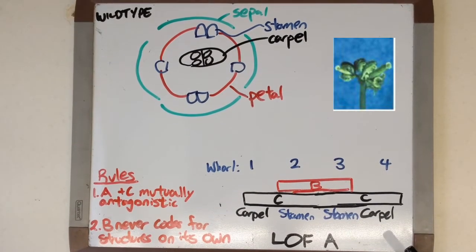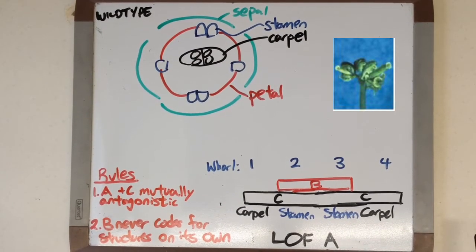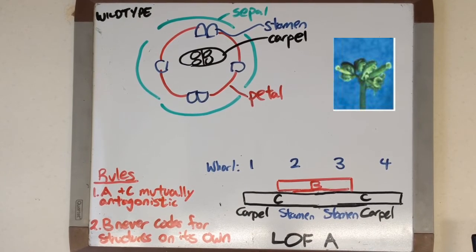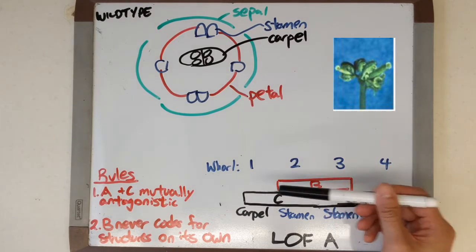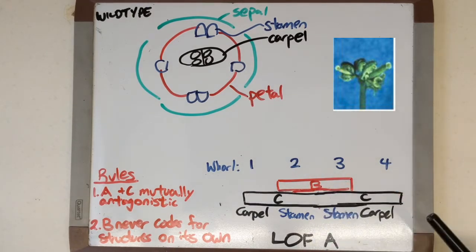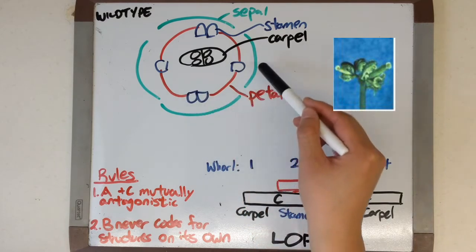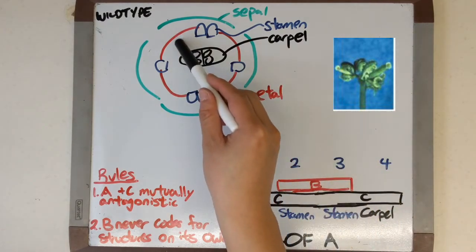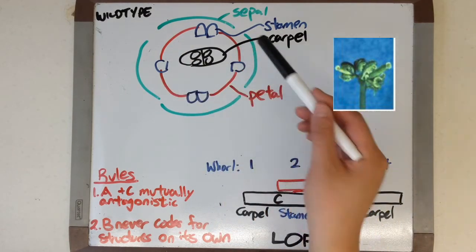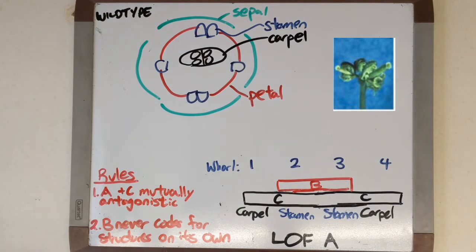So next we'll talk about some different mutations, starting with the loss of function of gene class A. If A is not present, C will not be repressed, and this means that gene class C will expand its expression to cover all four whorls. What this means is that whorl 1, which is normally sepal, and whorl 2, which is normally petal, will now be carpal and stamen respectively because it's gene class C and a combination of gene class C and B.